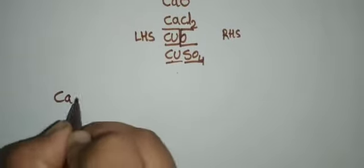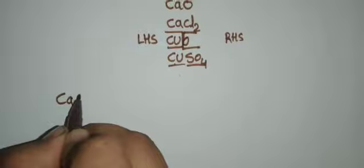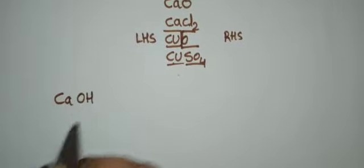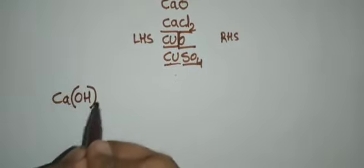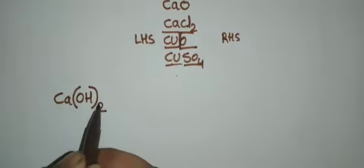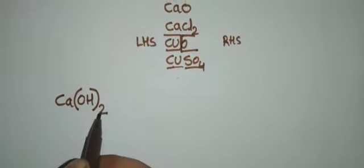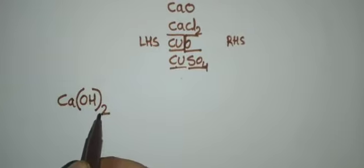In compounds formed with polyatomic ions, the ion is enclosed in a bracket before writing the number to indicate the ratio. For example, calcium hydroxide — hydroxide means OH — so we write Ca(OH)2. After the brackets, you write the ratio.